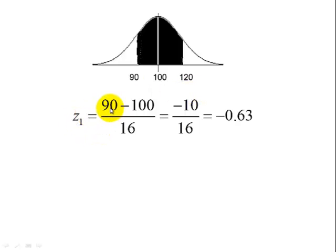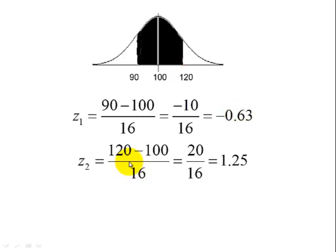The first z-score: 90 minus the mean, divided by standard deviation, gives us a z-score of negative 0.63. The second z-score: 120 minus our mean, divided by the standard deviation, gives us a z-score of 1.25.